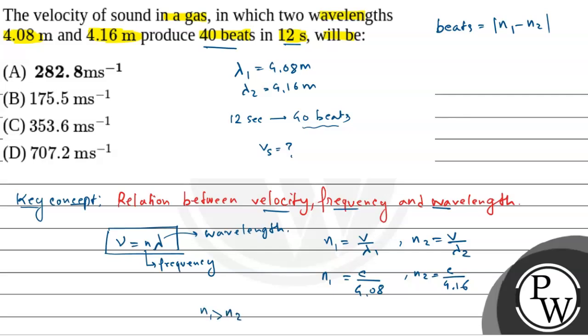Since n1 is greater than n2 and it creates 40 beats in 12 seconds, the beats per second will be 40 by 12.